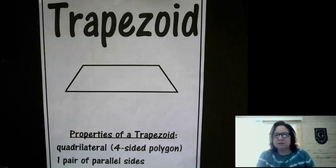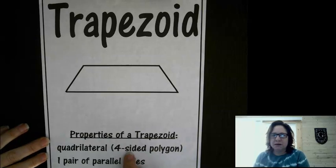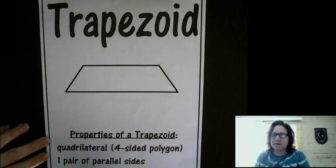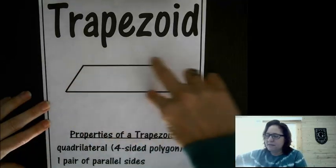The last one is the trapezoid, and it has four sides. It's a four-sided polygon with four straight sides, but it only has one pair of parallel lines. Those are parallel line segments.